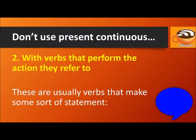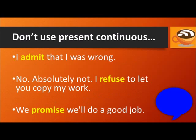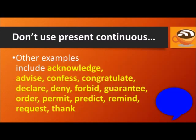We also tend not to use the present continuous with verbs that perform the action they refer to. These are usually verbs that make some sort of statement. For example: I admit that I was wrong. Absolutely not — I refuse to let you copy my work. We promise we'll do a good job. Other examples include acknowledge, advise, confess, congratulate, declare, and deny.